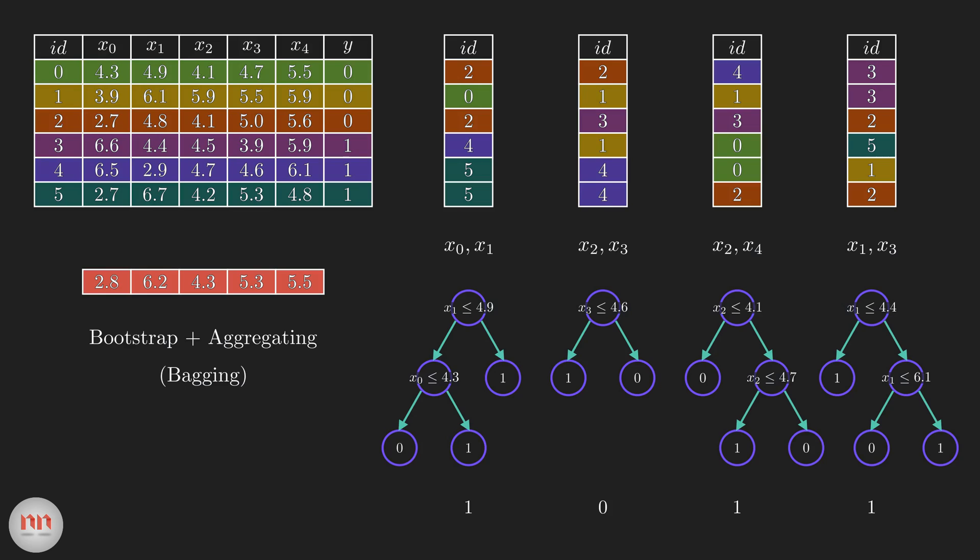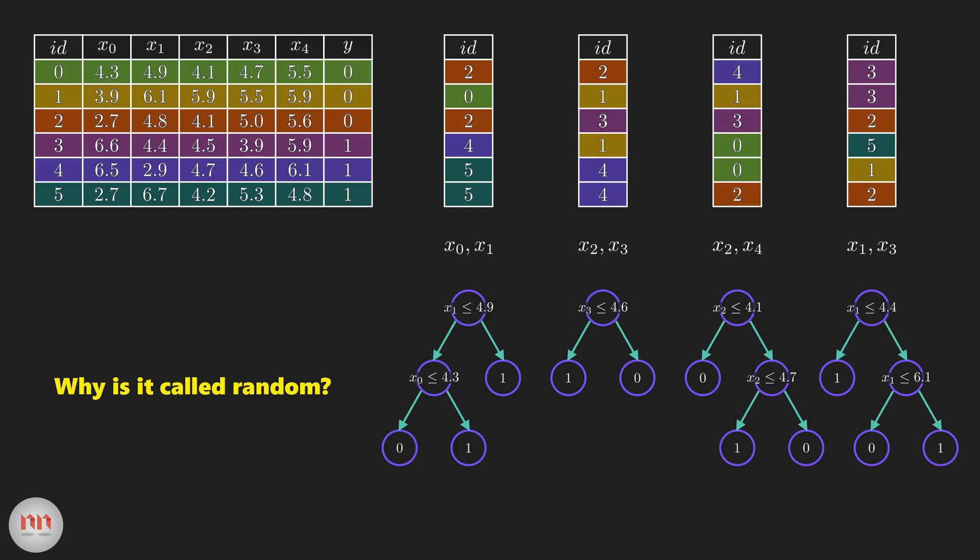Okay, so that was how we build a random forest. Now, I should discuss some of the very important points related to this algorithm. First, why it's called random? Because we have used two random processes, bootstrapping and random feature selection.